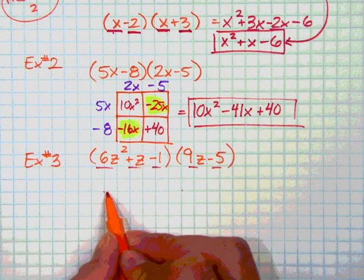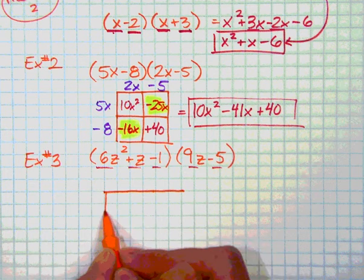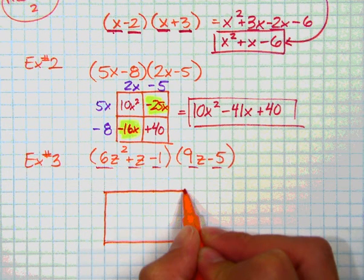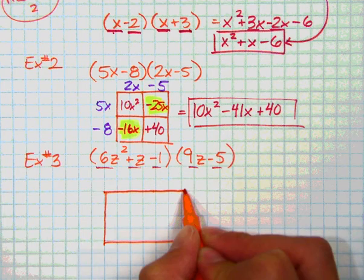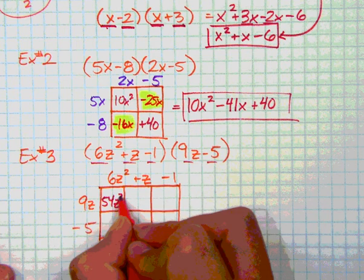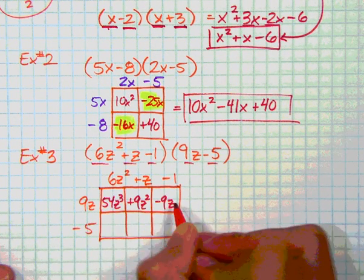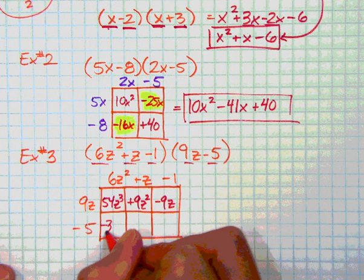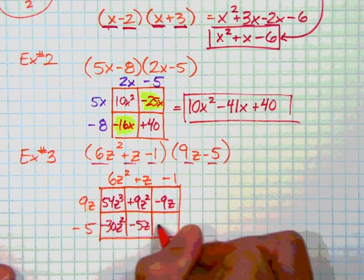All right. So there's my rectangle. Two terms this way. Three terms this way. All right. Let's see if this works out. 6z squared positive z minus 1 or negative 1. On the side over here, 9z negative 5. I'm going to go by really fast. So get ready for this. Here we go. All right. I get 54z to the third positive 9z squared. Negative 9z. Negative 30z squared. Negative 5z and 5.